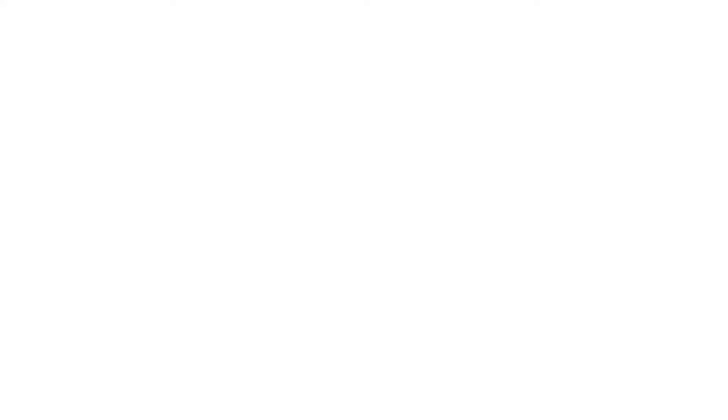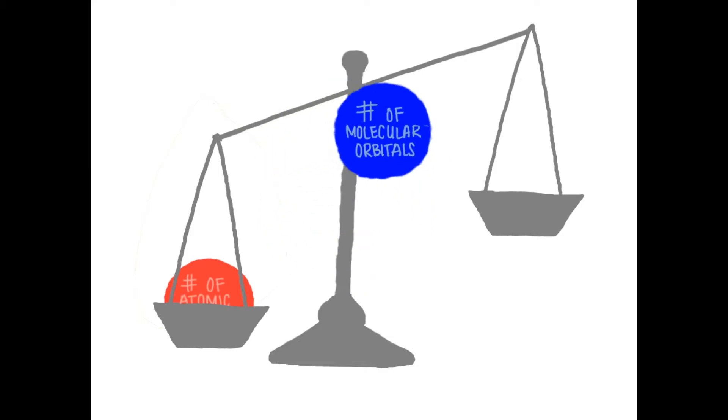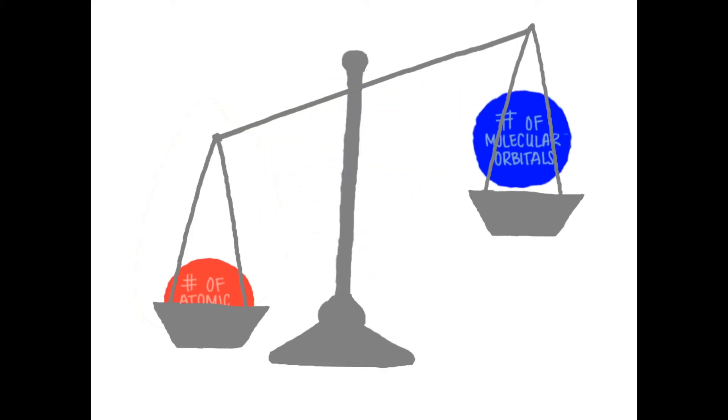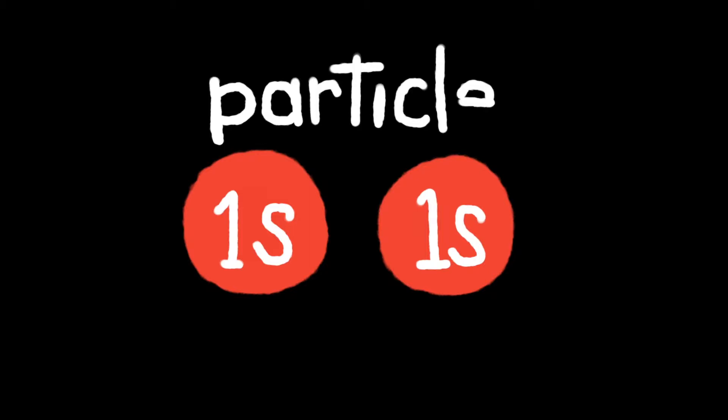We are going to talk about molecular orbitals. It is super important to remember that the number of atomic orbitals is equal to the number of molecular orbitals. We are going to look at the H2 molecule to understand the first level of molecular orbitals. Looking at the electron configuration of hydrogen, each hydrogen atom contributes one 1s atomic orbital.